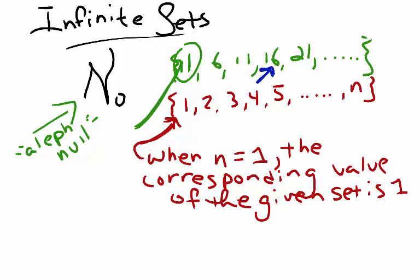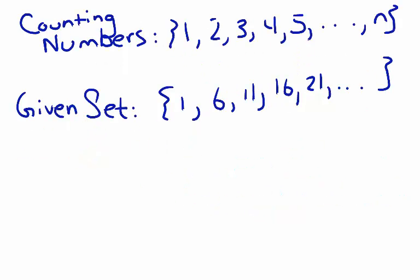When n equals four, we see that the corresponding value is sixteen. They are both the fourth elements of a set. Our job is to develop a general term for our problem set in the form of an expression that's going to represent the relationship between each counting number and its corresponding element in the set.